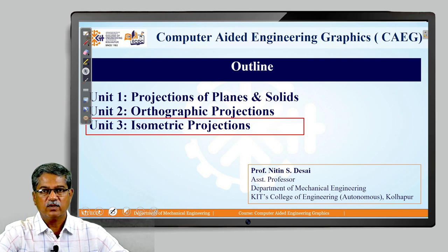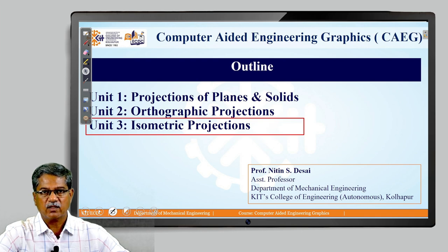As we can see, our course has three units. The first unit is projection of planes and solids, the second unit is orthographic projection, and the third unit is isometric projections. Today, we will be starting with the third unit, that is isometric projections.